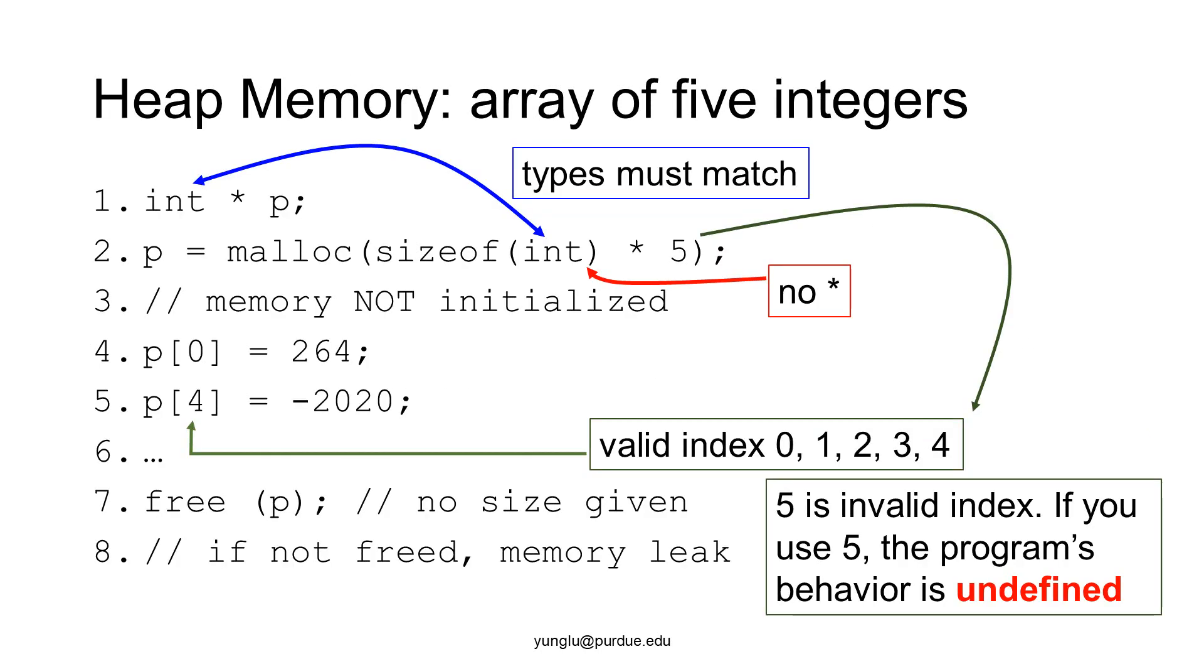This slide shows how heap memory can be used. Suppose you want to create an array of five integers. The first step is to create a pointer. Then, call the malloc function with the proper size of the data type and the number of elements we need. Please notice that the input for sizeof does not have asterisk.